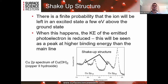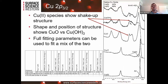As most of you know, with the shake-up structure there's a finite probability that an ion will be left in an excited state a few eV above the ground state. When this happens, the kinetic energy of the emitted photoelectrons is reduced, and we get higher binding energy peaks above the main line — the classic shake-up structure seen in Cu2+ species. Looking at Cu2+ species such as CuO and Cu(OH)2, you can see differences in the shapes of these satellite structures. We've done peak fitting of these transition metal spectra to quantify species, as we have for iron, chromium, nickel, and manganese.